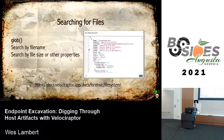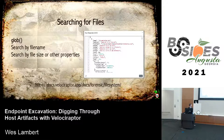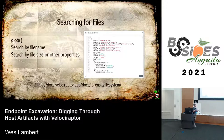When performing incident response or investigating a host, we might want to search for certain files of interest or just see what files are on the box. The core plugin Velociraptor uses for this is the Glob plugin — it allows us to search by file name, file size, or other file properties. It's a really basic but core construct used throughout the artifacts, often in conjunction with other plugins and functions.